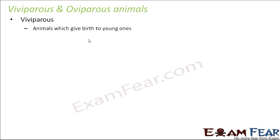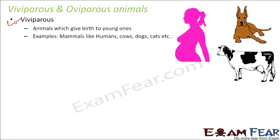Viviparous animals are those which give birth to their young ones directly. Even though egg cells are formed inside, the fertilization of the egg and the development of the fertilized egg into an embryo and then into a fetus — all those developments take place inside the mother's body. Examples of viviparous animals are humans, cows, dogs, and cats.